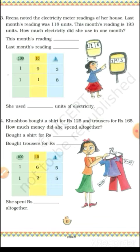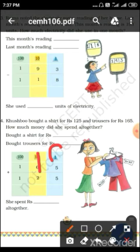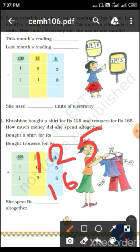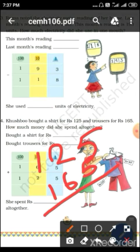Answer is 13 units of electricity. Next: Khusbu spent rupees 125 on salt and rupees 165 on a trouser. How much money did she spend altogether? So Khusbu bought salt for Rs. 125 and trouser for Rs. 165.